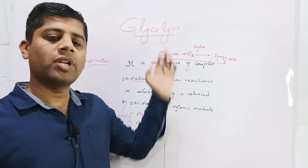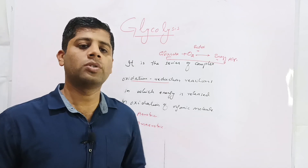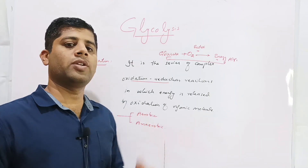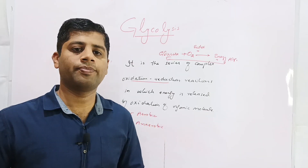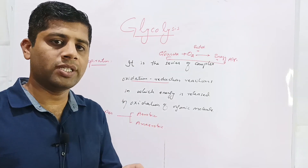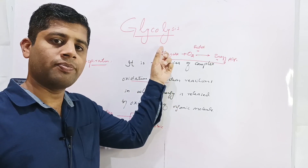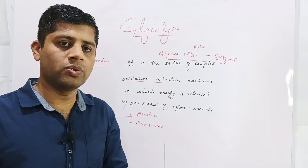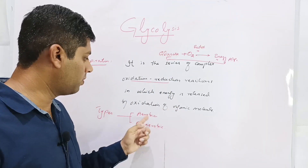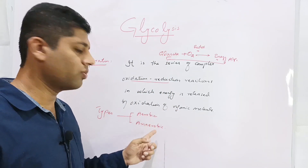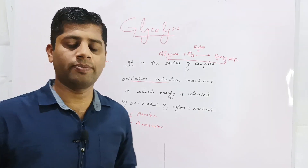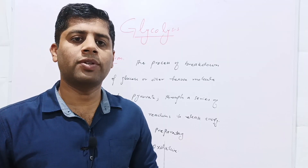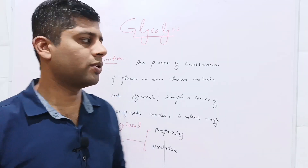The pathway of glycolysis is common to both aerobic as well as anaerobic respiration. Simply, glycolysis is a common step for the breakdown of glucose molecules in both aerobic and anaerobic respiration. Glycolysis is a metabolic pathway of the respiration process.